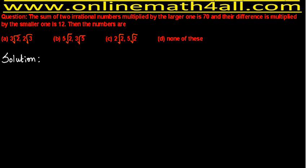Now let's check Option B: 5√2 and 3√5. Here we again have two unlike radicals — the first has 2 under the radical and the second has 5. Since they are unlike radicals, the sum multiplied by the larger one will give an irrational result, not a rational number like 70. So we don't even need to calculate — Option B is not correct for the same reason as Option A.